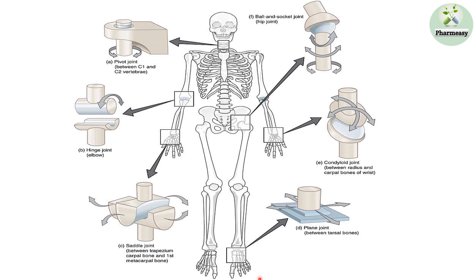Now we can see different joints present in different parts of the body. In the neck region, a pivot joint is present that helps in 180-degree rotation of our head. The elbow has a hinge joint that allows movement of the hand in only one direction. A saddle joint is present between the carpal and metacarpal that helps in wrist movement. Ball and socket joints are present in the hip bone and the shoulder bone that help in the movement of limbs. Condyloid joint is present between the radius and carpal bones of the wrist, and the plane joint is present between the tarsal bones that help in ankle movement.